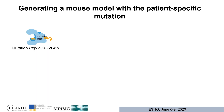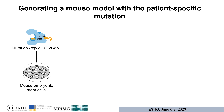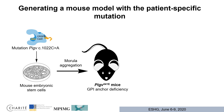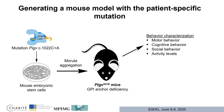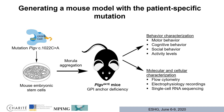Therefore, the first aim of this project was to generate a mouse model with a patient-specific mutation. For this purpose we used CRISPR-Cas9 technology to introduce the most prevalent mutation observed in European patients into mouse embryonic stem cells, which we further used in morular aggregation to generate the mouse model. We call the mouse model PIG-V341E, representing the amino acid change caused by the mutation. We characterized the mice behaviorally and also performed molecular and cellular characterization.